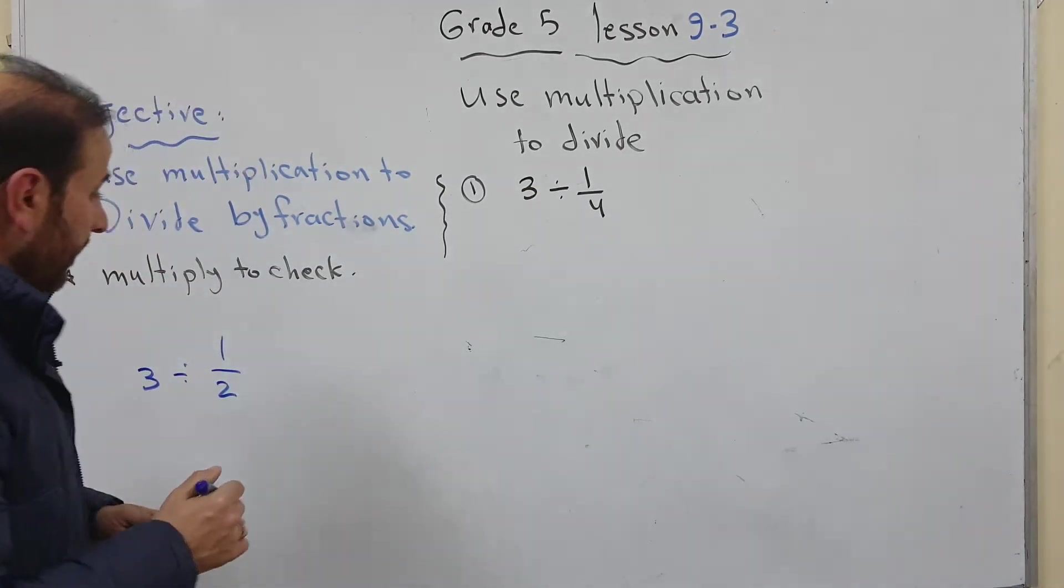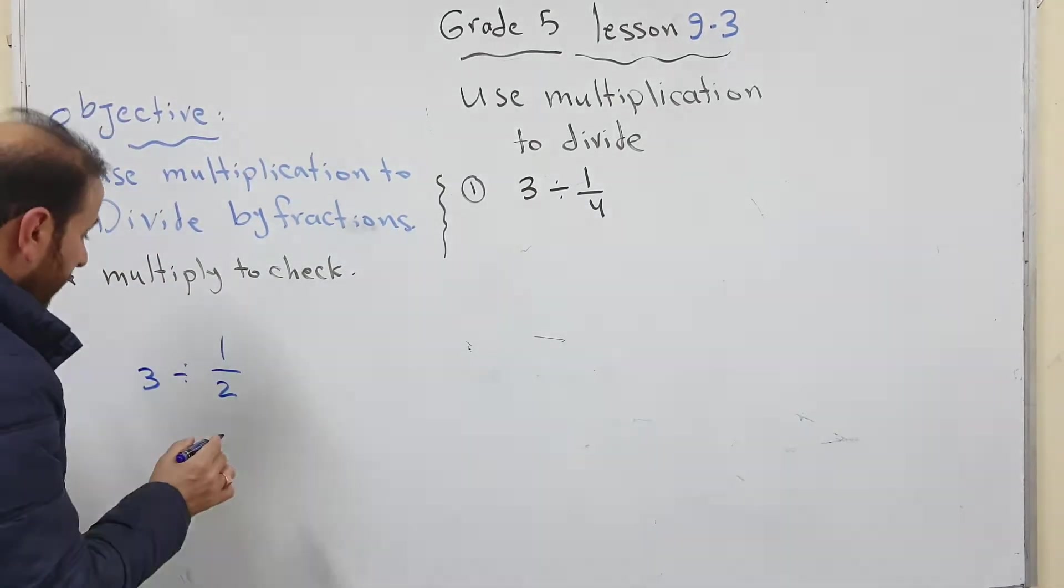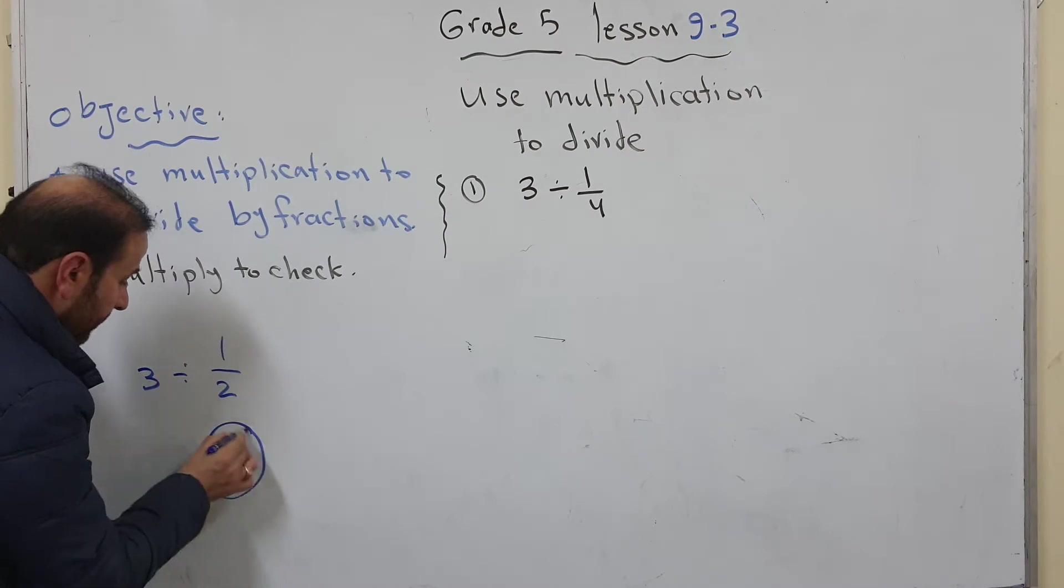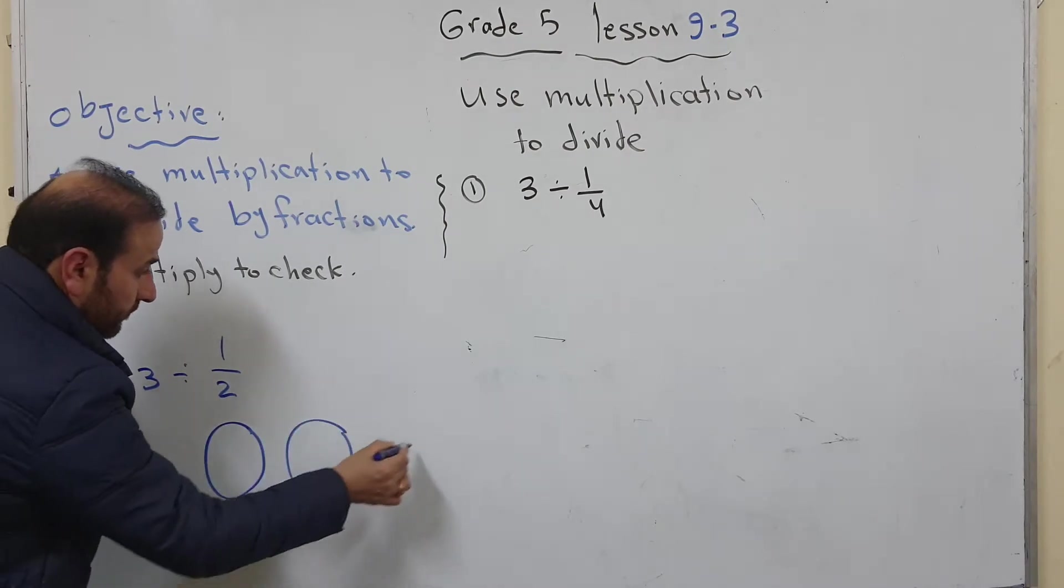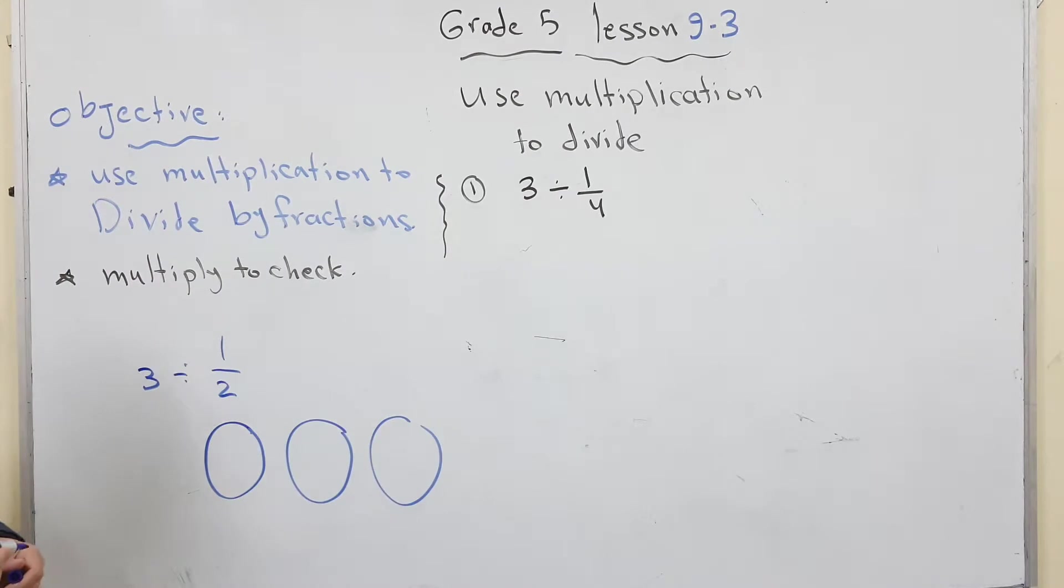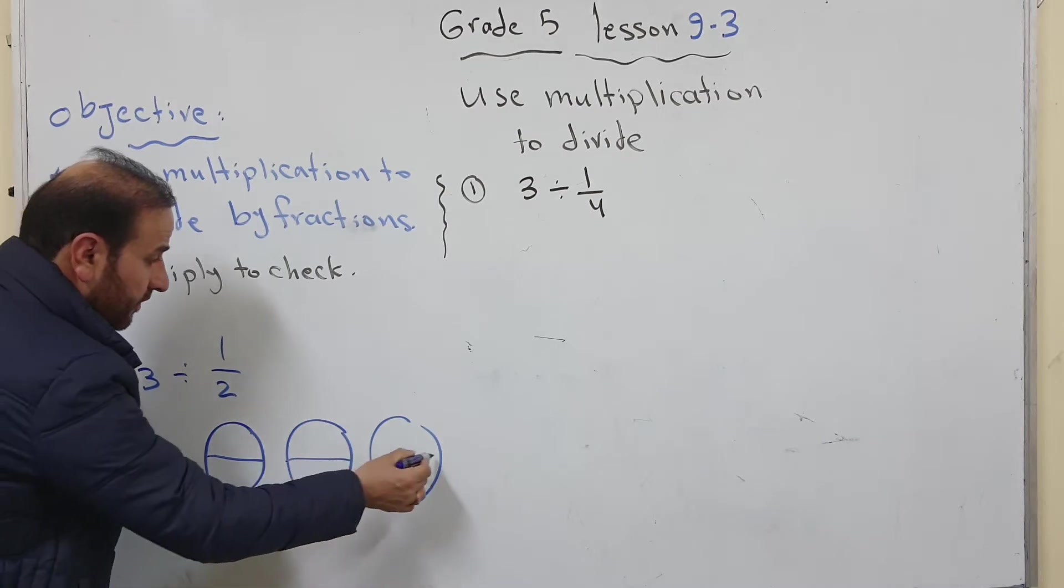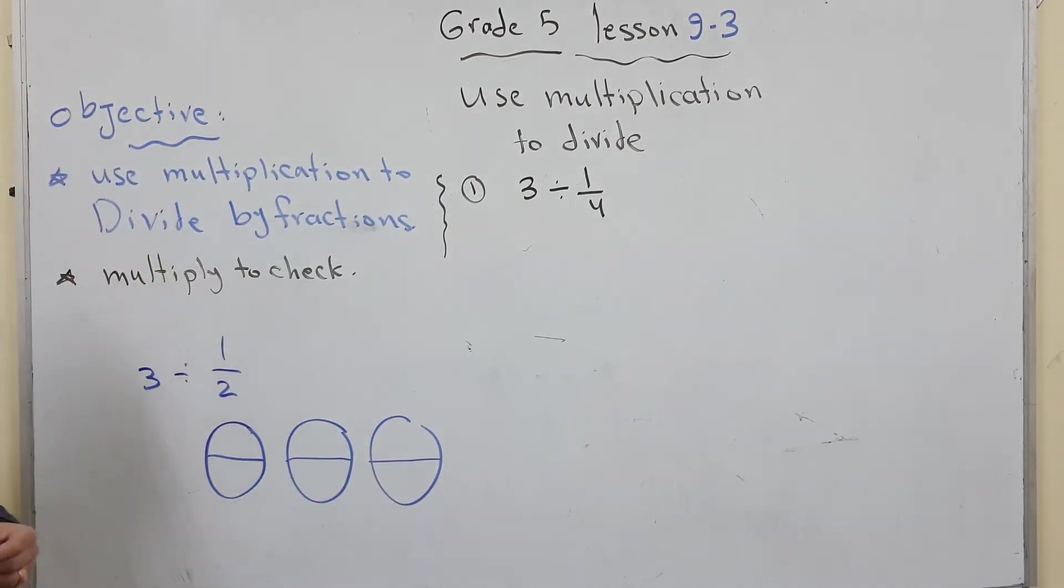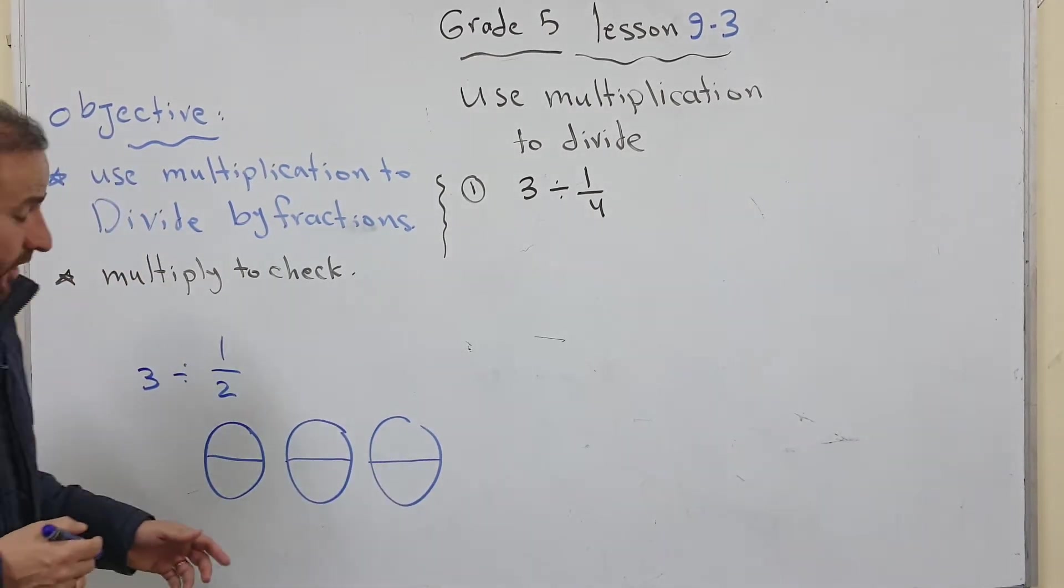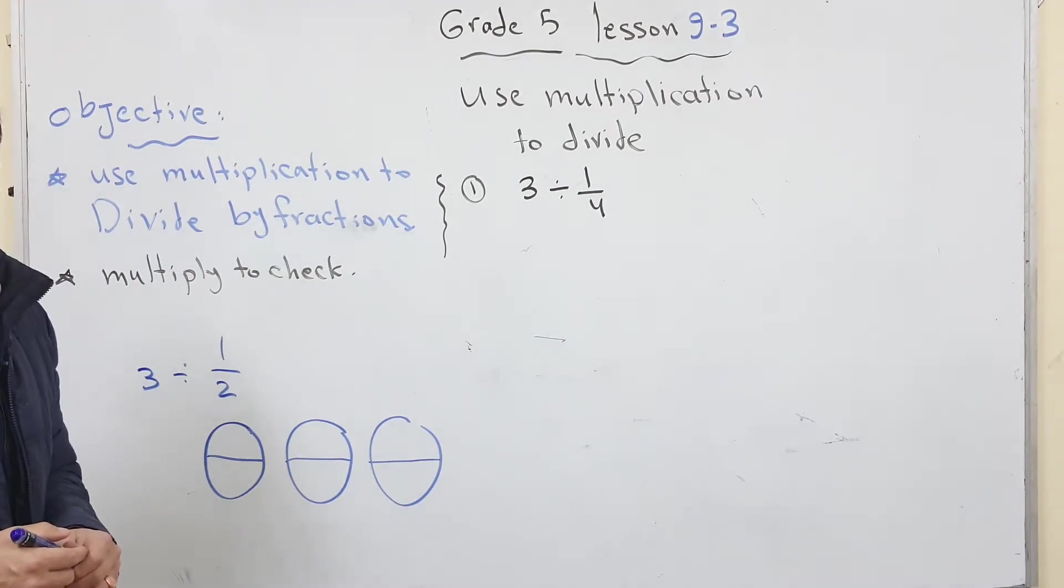So if I use models, look I have 3 wholes. And the question is how many halves we have. So we divide them into halves.